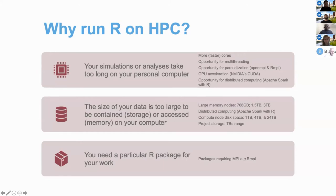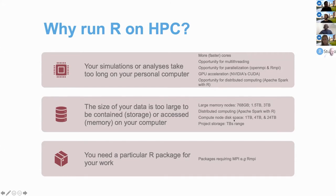Another reason to consider OSC is the ability to use large datasets. If the size of your data is too large to be stored or accessed in memory on your machine, you can consider OSC because we have large memory nodes. Each node ranges from about 700 GB to about 3 terabytes of memory. You can also take advantage of distributed memory across multiple nodes. Apart from the memory, you can take advantage of disk space available on the compute node, which is separate from project storage — nodes have disk space ranging from one terabyte to 24 terabytes.